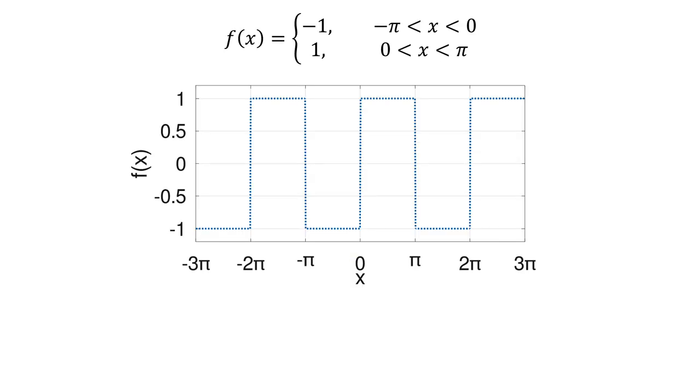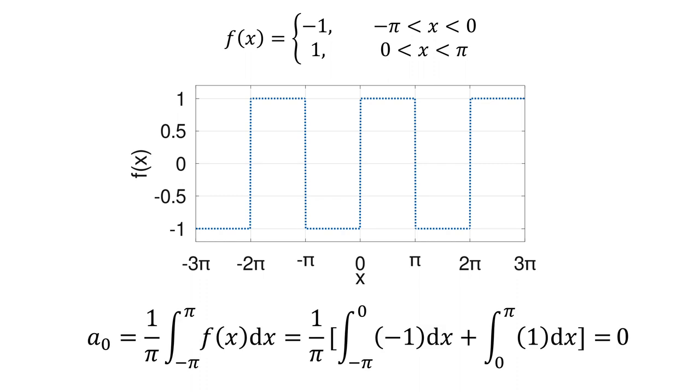First of all, we will calculate a0 using the formula. We need to take an integral from minus pi to pi, but fx has either minus 1 or 1 depending on the range of x. So we will split it into two integrals. Between minus pi and 0, fx equals minus 1, and between 0 and pi, fx equals 1.